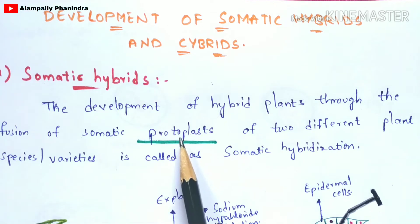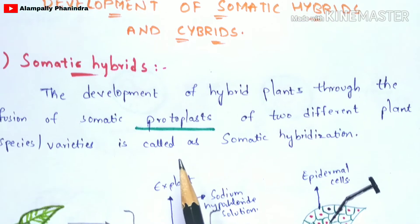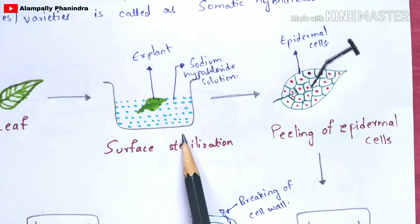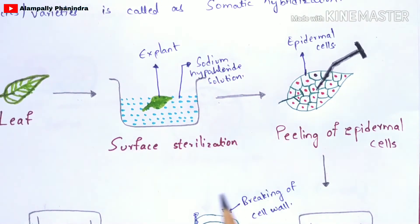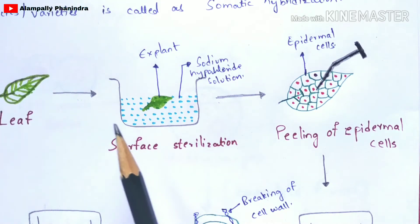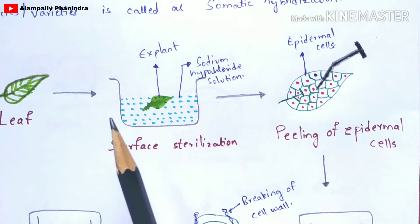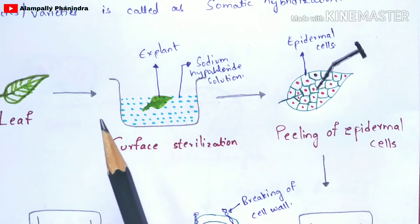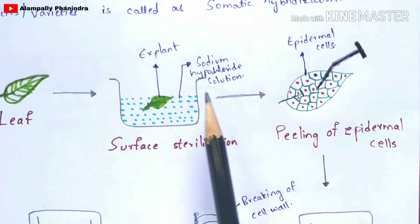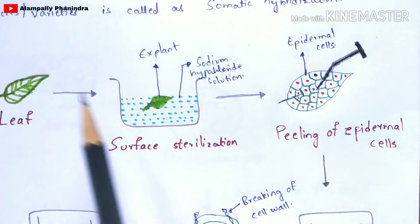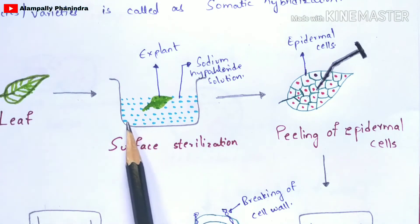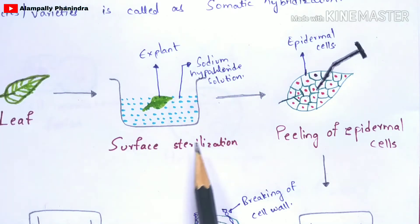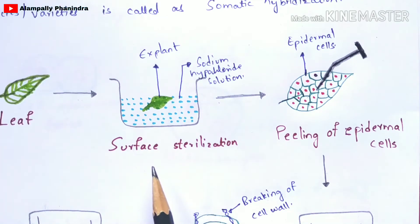The cell wall is made to be removed from the protoplast. To isolate protoplasts, we take a leaf from a properly matured mother plant — one where the shoot system as well as the root system are properly developed. Then you have to surface sterilize that leaf.